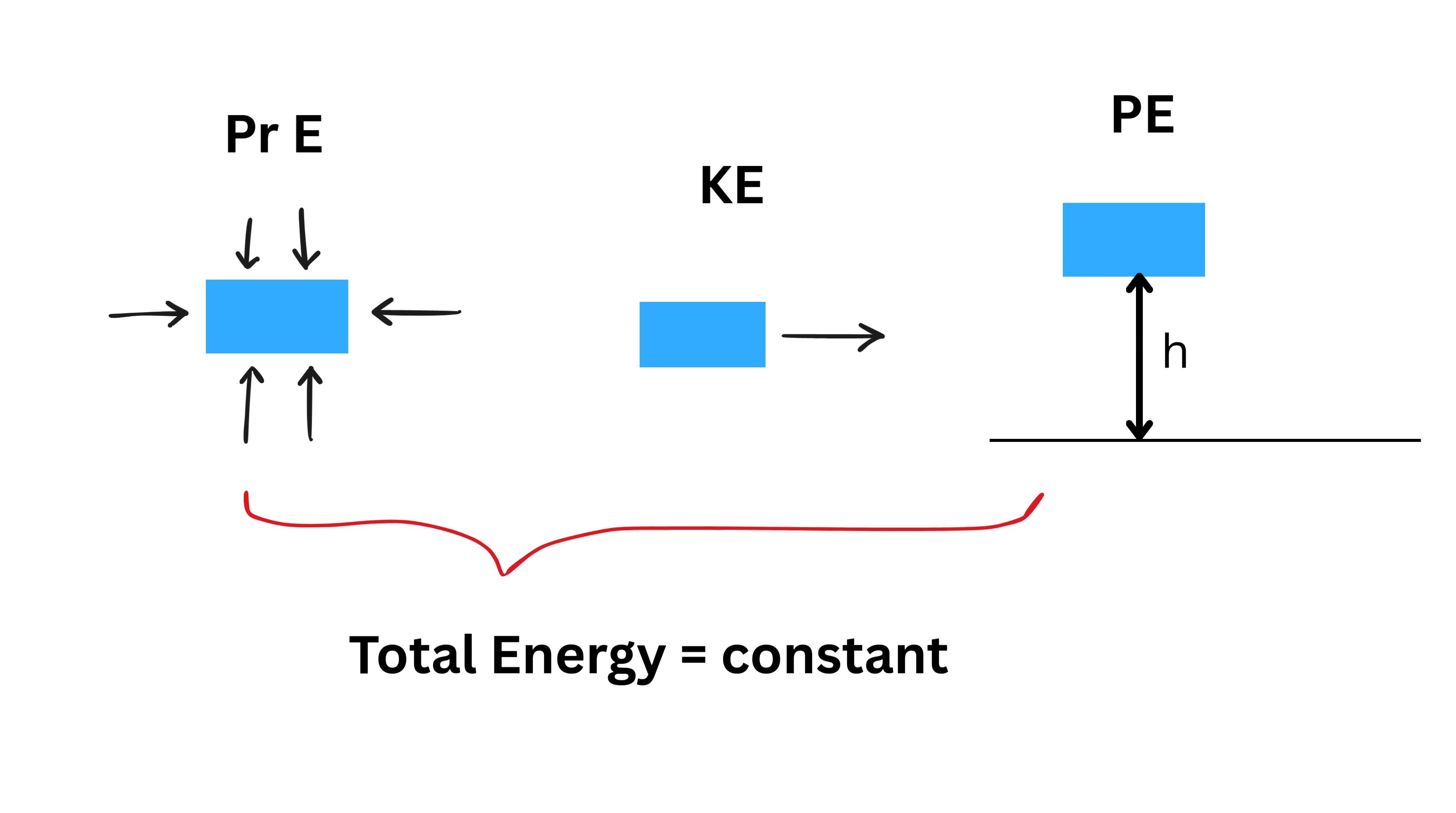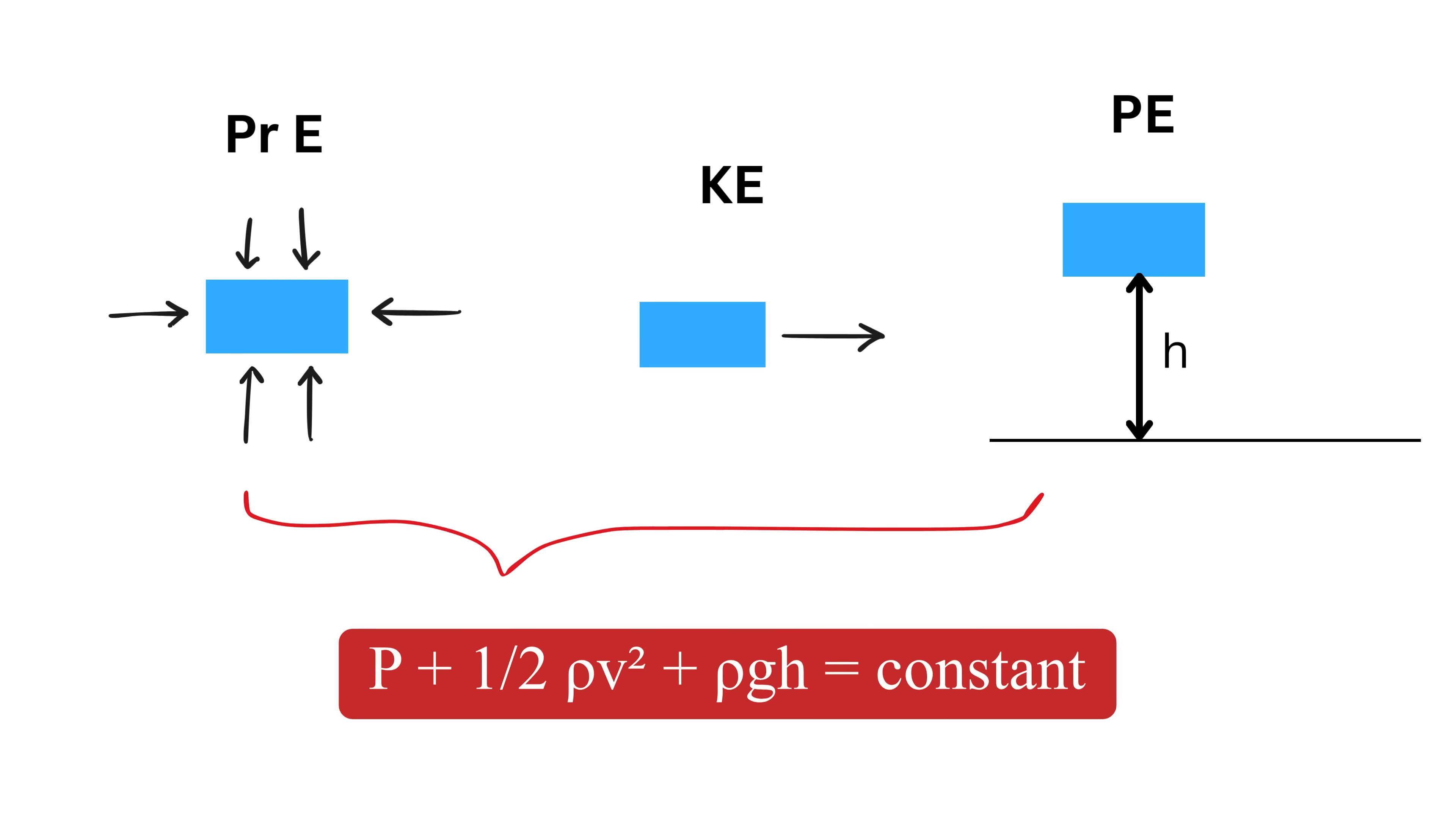In formula form, Bernoulli's equation is P plus 1/2 times rho times V squared plus rho times G times H equals constant. Here, P is the pressure at a point in the fluid, rho is the density of the fluid, V is the speed of the fluid at that point, and H is the height above a reference level.